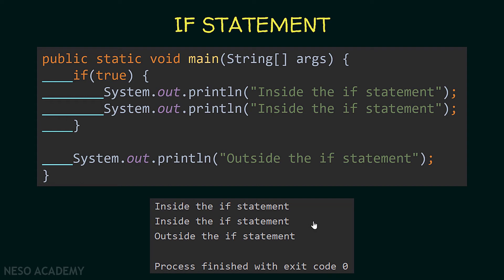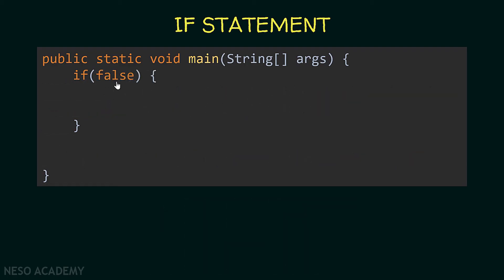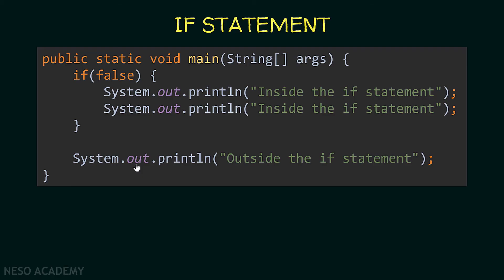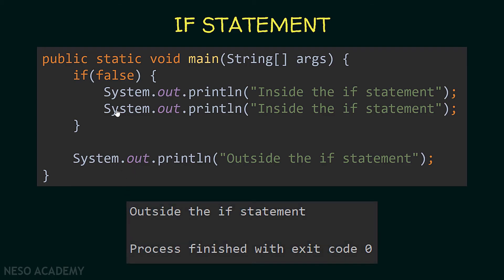Have a look at the indentation — it's obvious these two statements are inside the if statement, and the outside statement is at the same level as the if keyword. Now let's see the same example with the condition set to false. Because the condition is false, the two statements inside the braces will not be executed. After the if statement, we execute the outside statement, so only that string is printed.